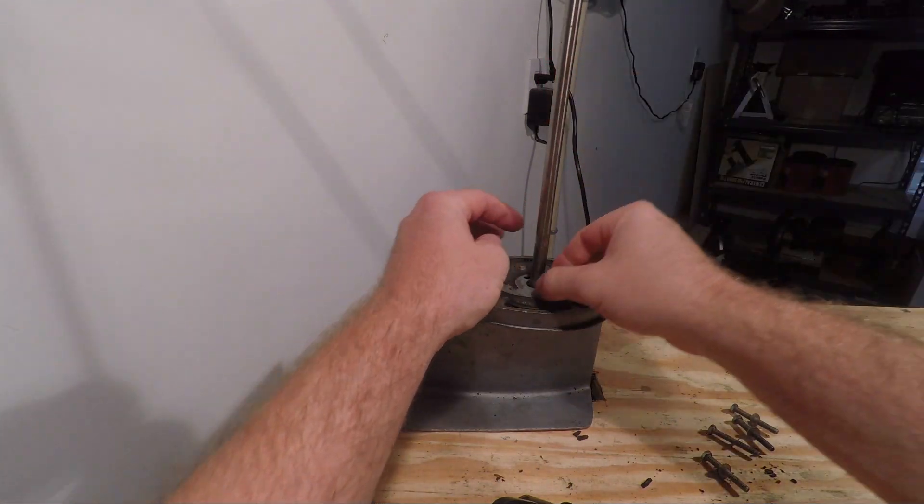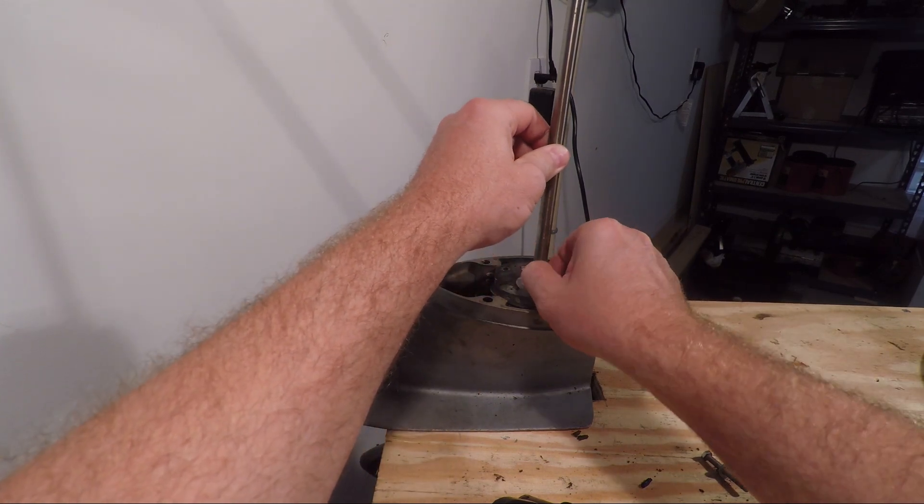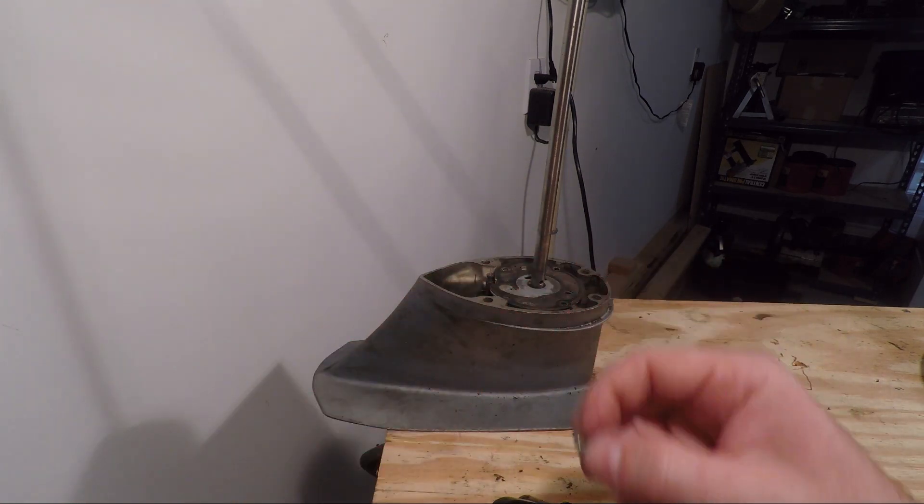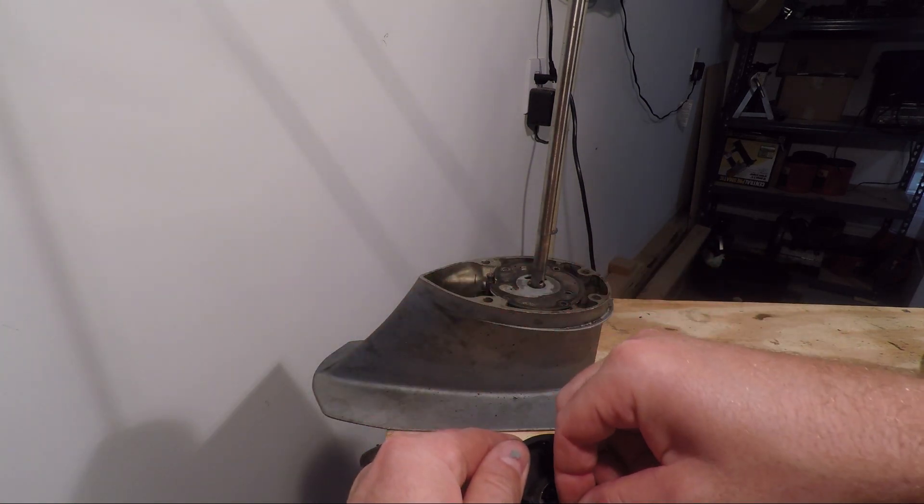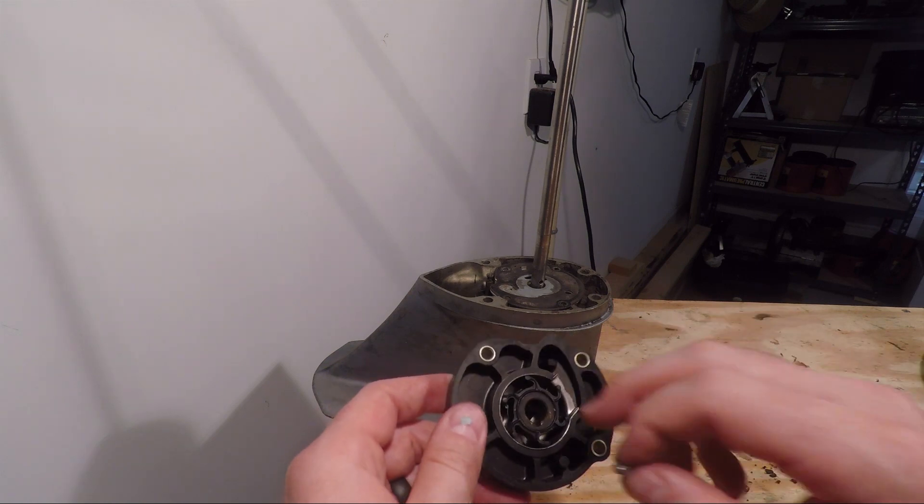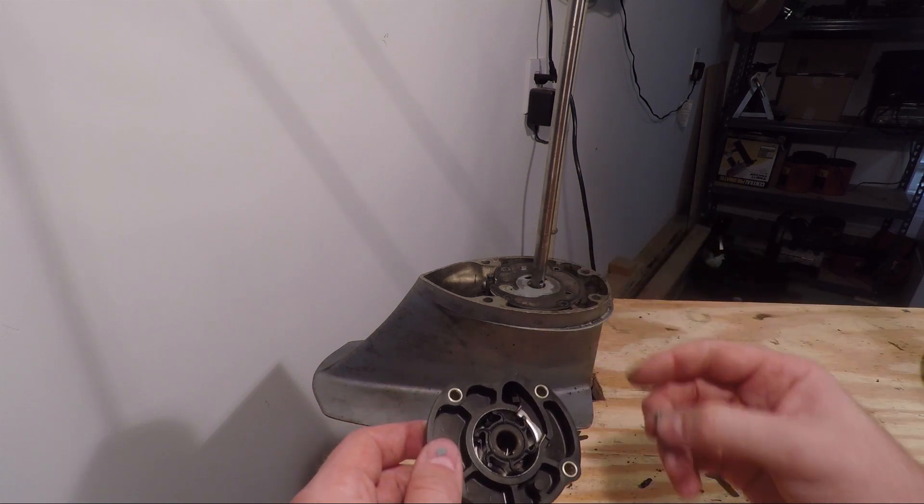If you look on the drive shaft there's a little metal key here that can be removed. This key is going to slide down into that slot, and that allows the drive shaft to catch the impeller and make it spin.